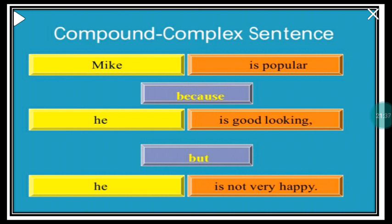I hope you have understood the concept of simple, compound, complex, and compound complex sentences well. Make sure you make two lists of conjunctions — subordinating and coordinating — and learn them thoroughly. Then we will go on to the next topic: transforming sentences from one type to another, from simple to compound, compound to complex, and so on. Have a nice day.